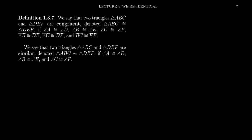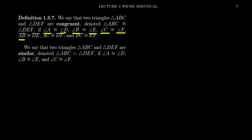We say that two triangles ABC and DEF are congruent if all of the corresponding parts are congruent. That is, triangle ABC is congruent to DEF if angle A is congruent to angle D, angle B is congruent to angle E, angle C is congruent to angle F, side AB is congruent to DE, side AC is congruent to DF, and side BC is congruent to EF.